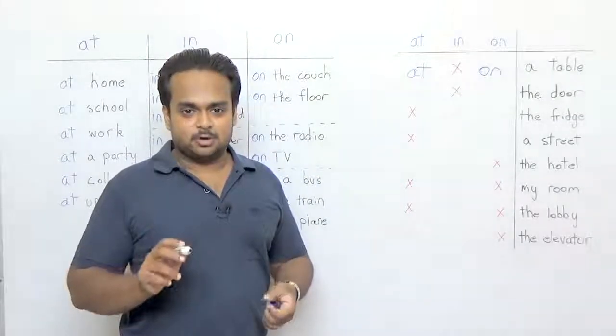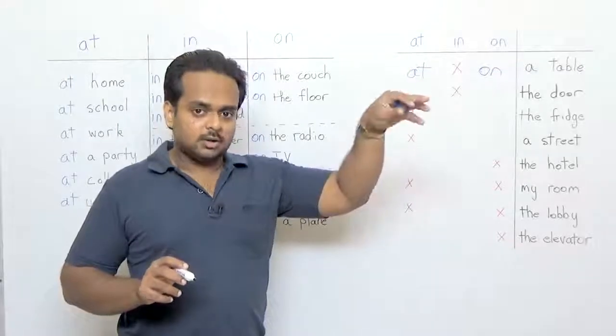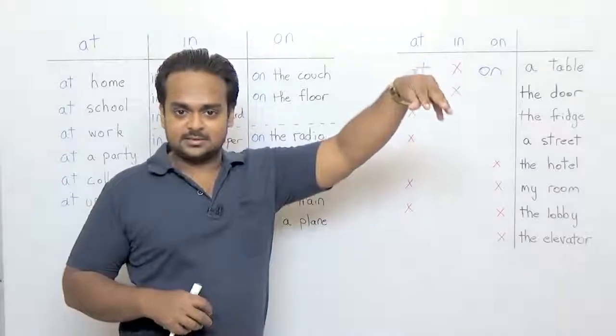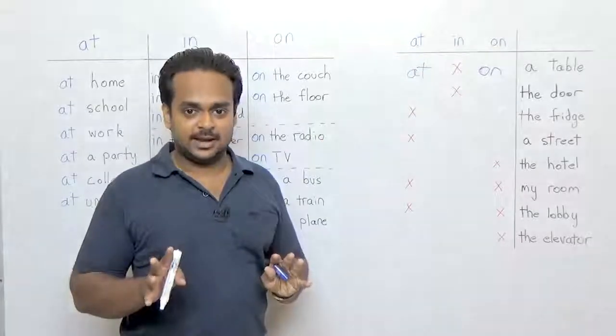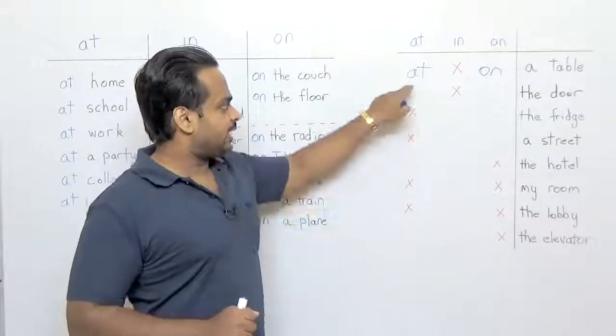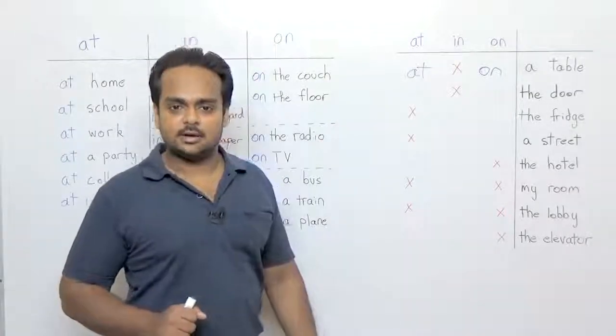If we say that a person sat on a table then that would mean that they climbed on top of the table and sat there which is a very strange sight and a manager of the restaurant may have even called the police. So be aware of that difference between at and on.